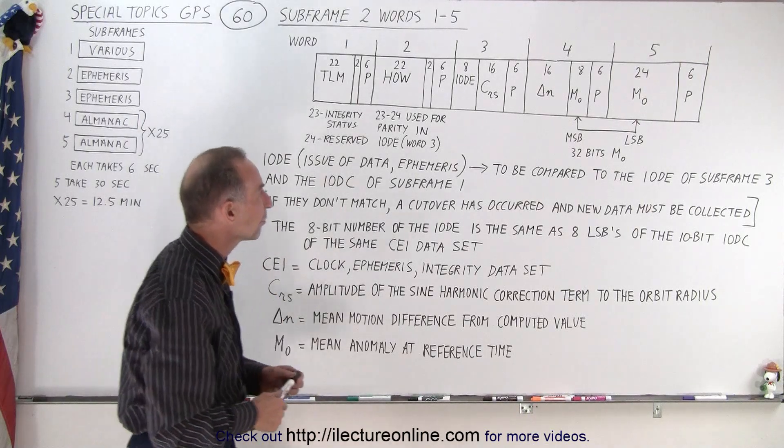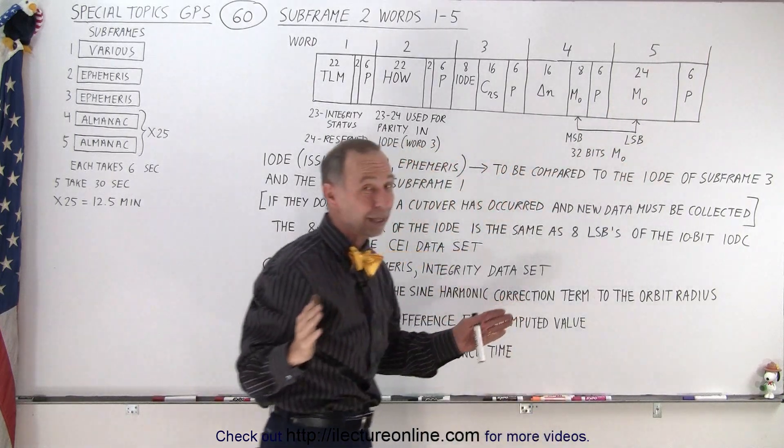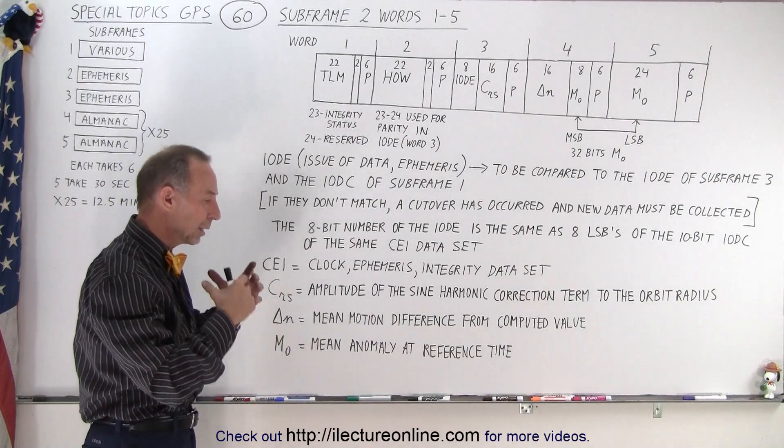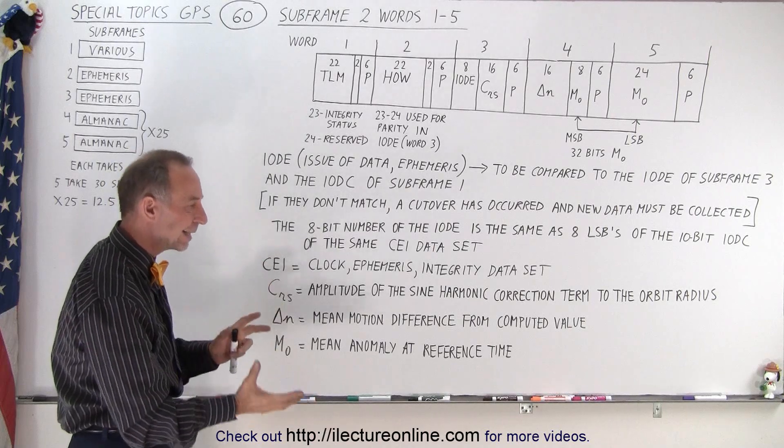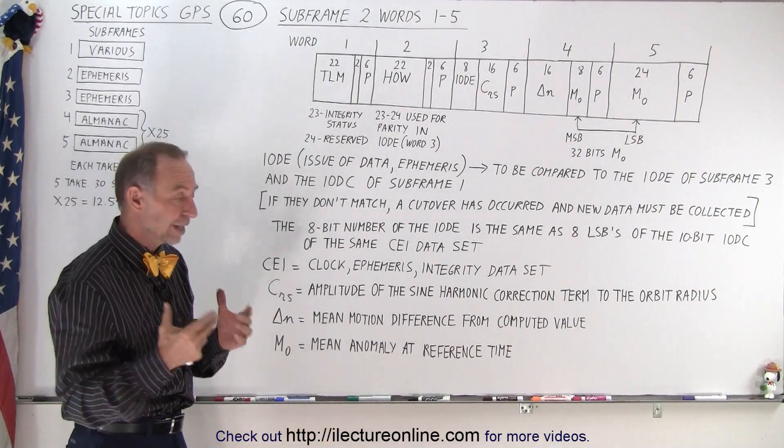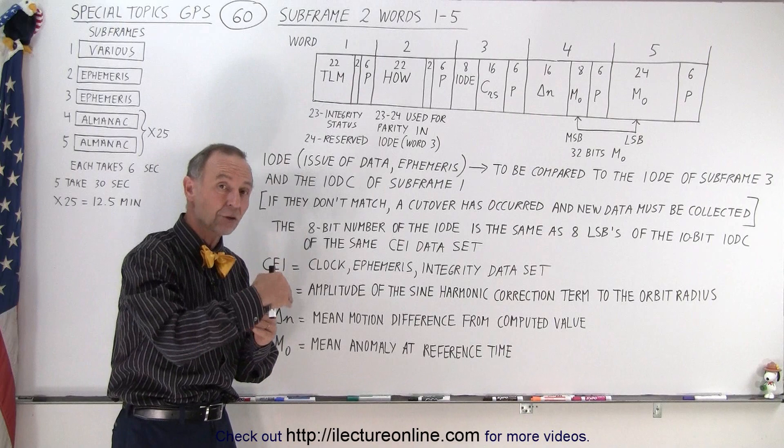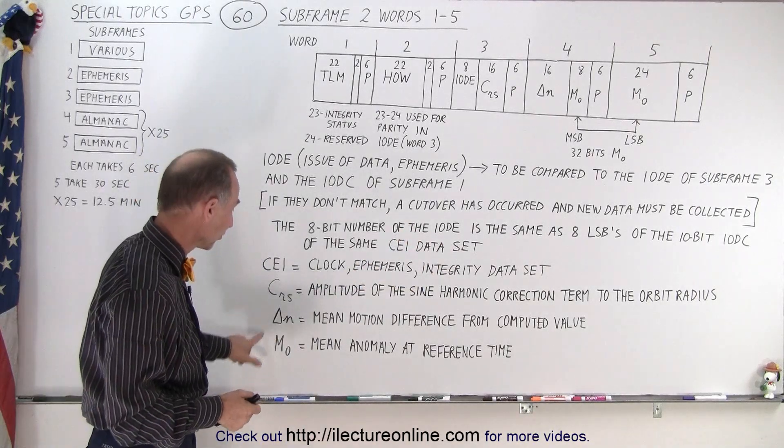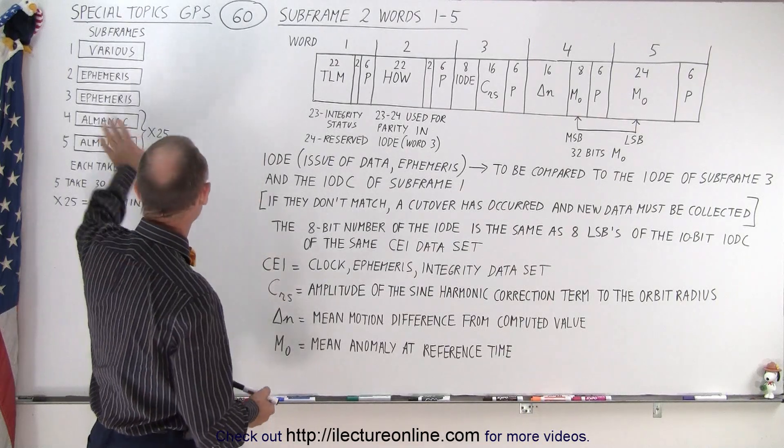And then finally we have the mean anomaly at reference time. Notice 8 bits are in word 4 and 24 bits are in word 5 for a total of 32 bits. So that's a lot of bits. The reason for that is that this particular parameter is used to recalculate and adjust for potential eccentric anomalies. In other words, the eccentricity of the orbit needs to be constantly adjusted and this is one of the parameters that goes into the adjustment term to make sure that we know exactly what the eccentricity is of that particular satellite because any slight changes or anomalies in that eccentricity will cause you to have the wrong position for the satellite. If you have the wrong position of the satellite, then of course you have the wrong position of your receiver on the Earth.